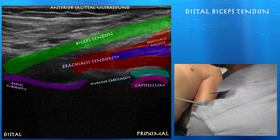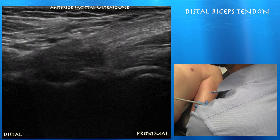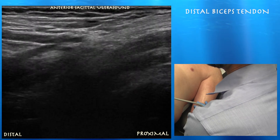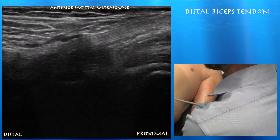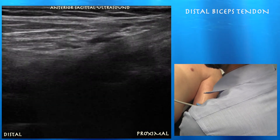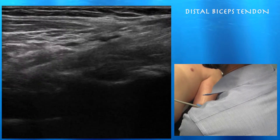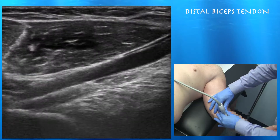This is your typical anterior approach where it can be challenging to get a complete view of the biceps tendon as it dives deep and inserts on the radial tuberosity. You also get challenged with anisotropy to actually see that distal biceps tendon, which you can see here.